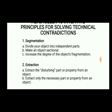First, segmentation: if a product is whole, divide your product into independent parts and make a product sectional so that we can change a section, not the complete product — this increases the degree of object fragmentation. Then extraction: if a complete part is found to be defective, notice which section or part is disturbing the whole product.